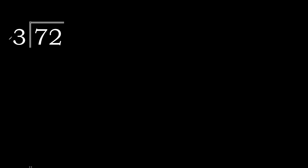72 divided by 3. 7 is not less, therefore 7. 3 multiplied by which number is nearest to 7 but not greater? 3 multiplied by 3 is 9, which is greater, therefore 2.